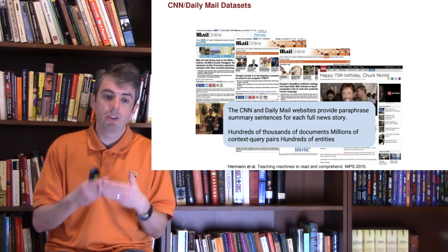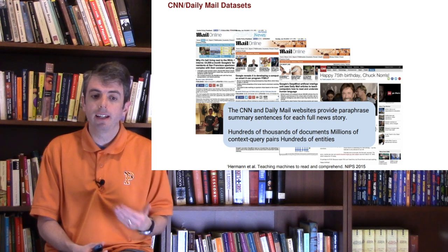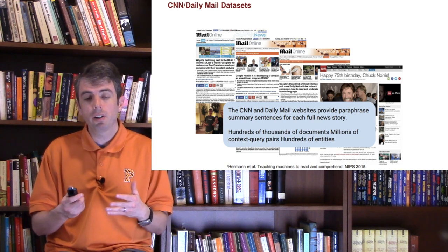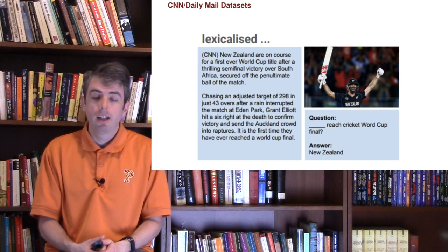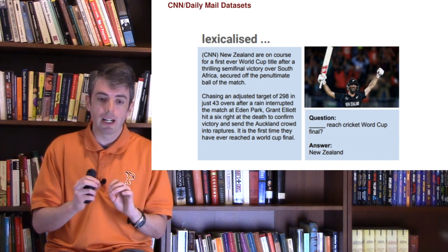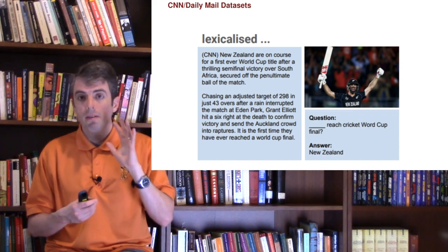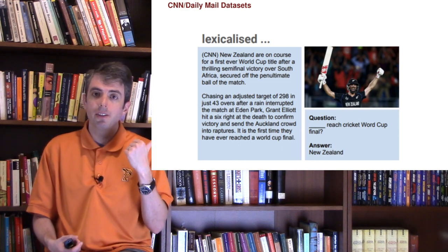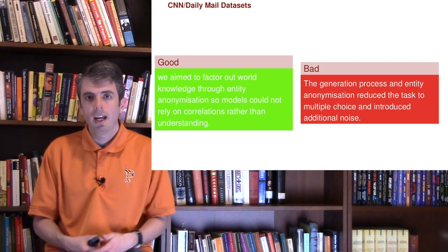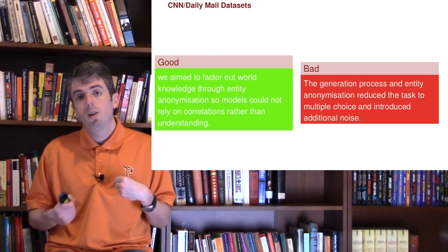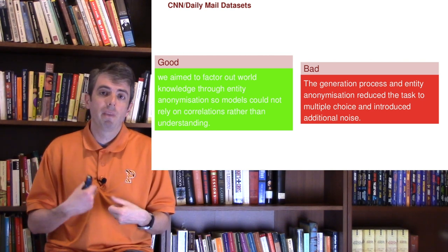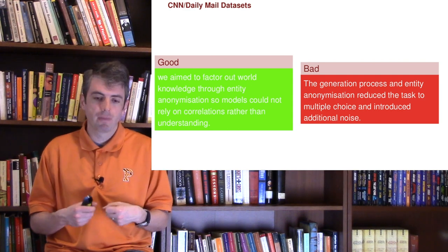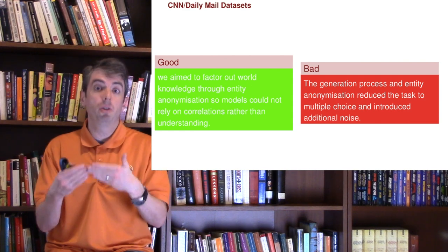One of the first machine reading datasets was the CNN Daily Mail dataset from Karl Marx, Hörmann & Co. And so here you have a bunch of news articles, and they asked you to answer questions about those news articles. So it was very localized to an individual document, and there were questions like, who reached the Cricket World Cup? And you would have to answer New Zealand, and the answer was somewhere in the document. The nice thing about this is that it anonymized the entities so that you didn't use a bunch of world knowledge and essentially language models to fill in the blanks. But there were relatively few possible answers that could fill in the blank.